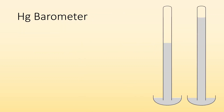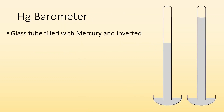A mercury barometer is basically a glass tube filled with mercury and inverted. So we have this glass tube inverted — you can see it's open down here, and there's a pool of mercury down here as well.